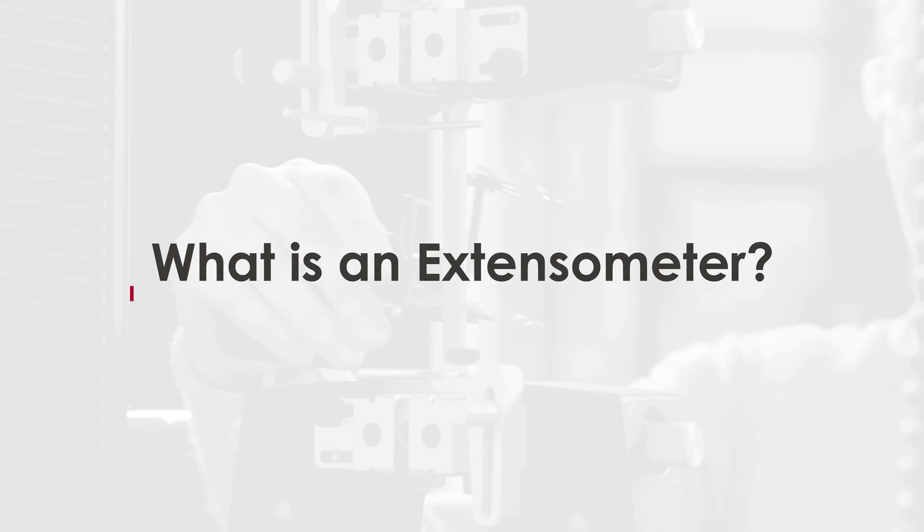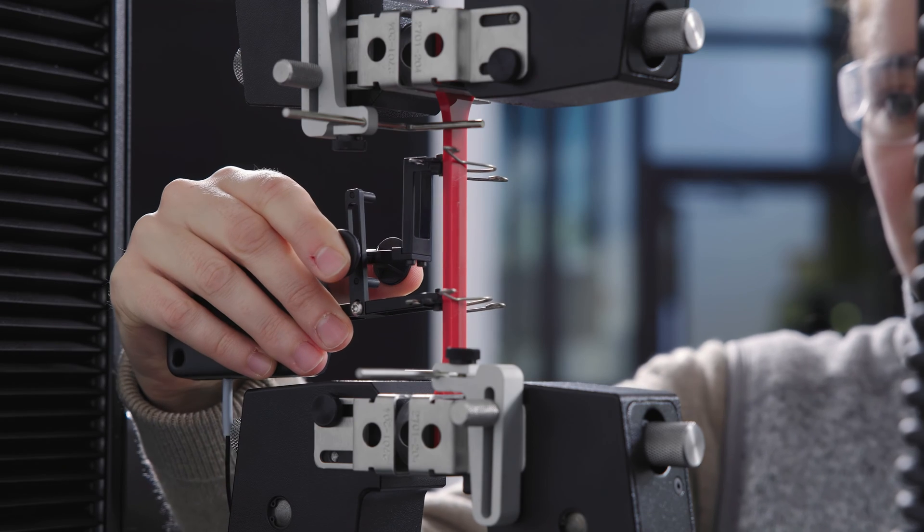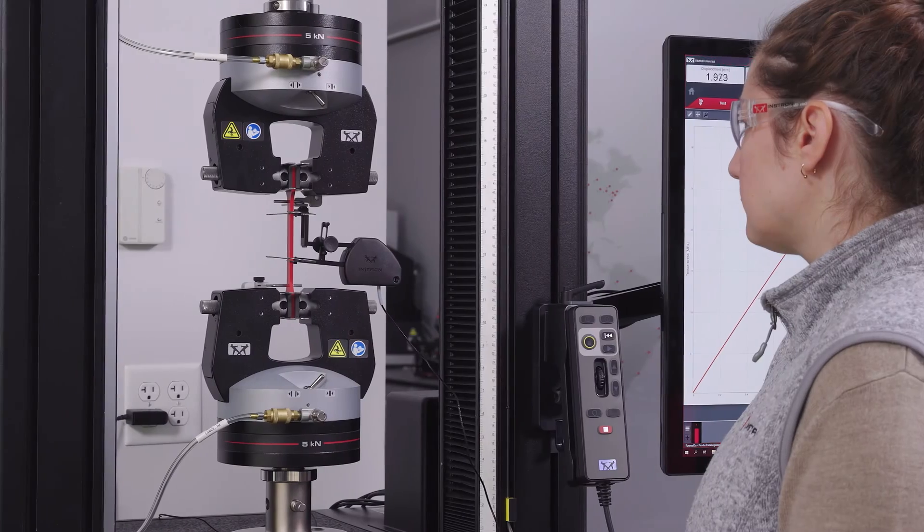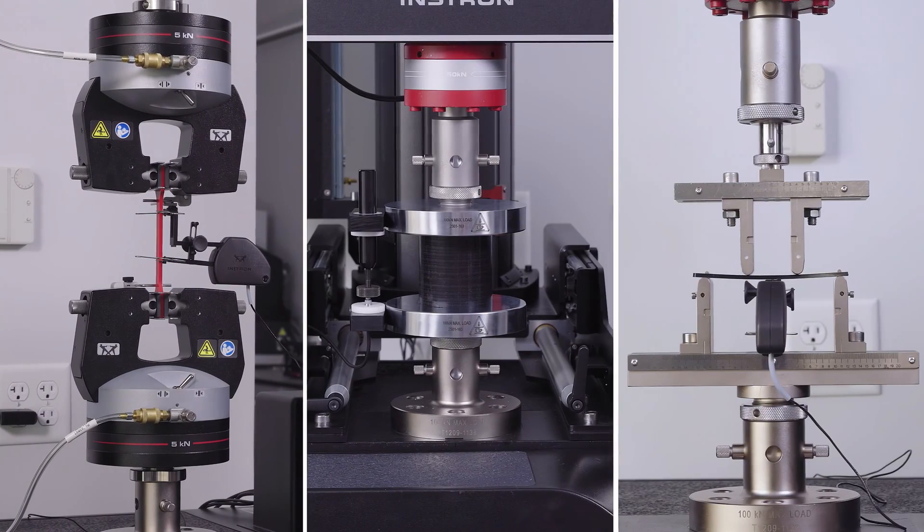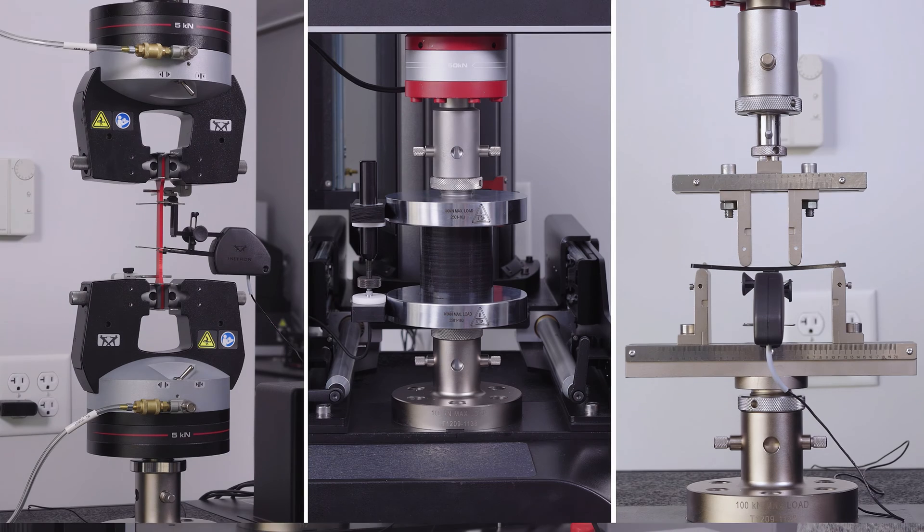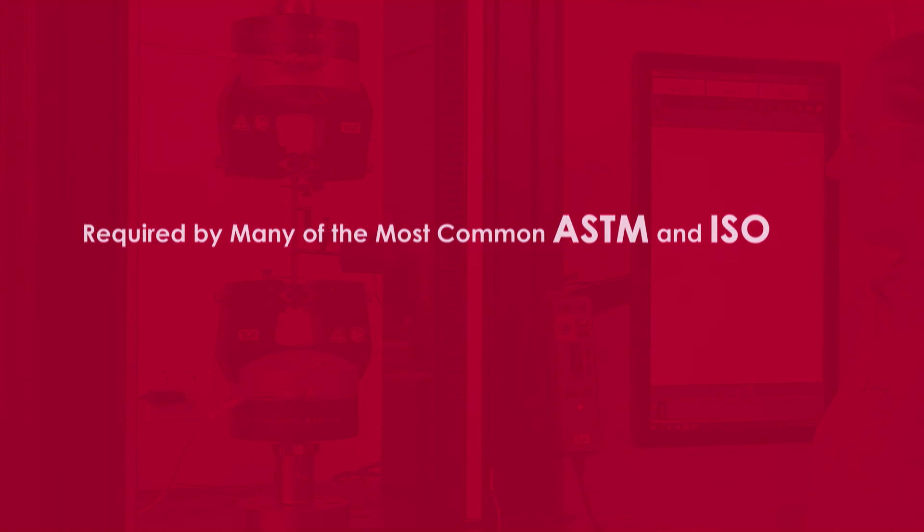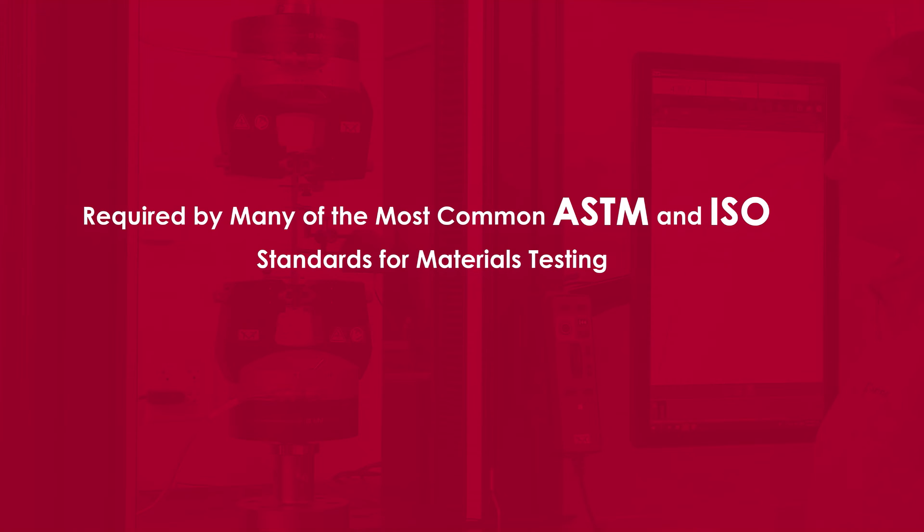An extensometer is a device used to measure mechanical deformation in an object undergoing tensile, compression, flexural, or other forms of testing. Measurement of deformation is called strain and is required by many of the most common ASTM and ISO standards for materials testing.